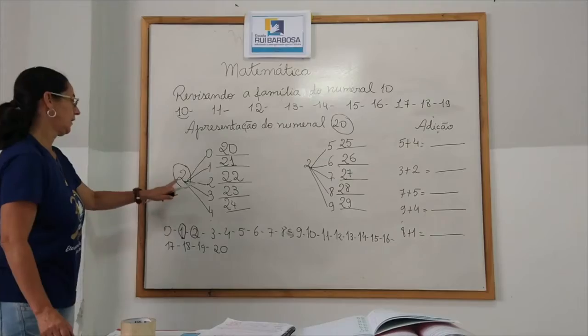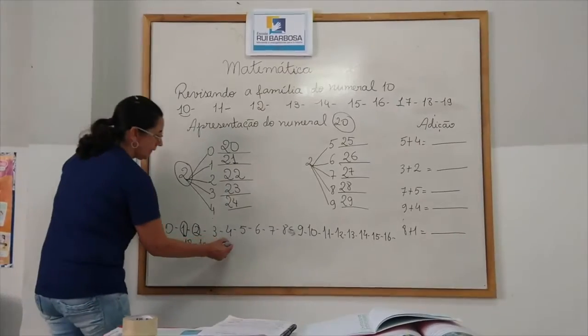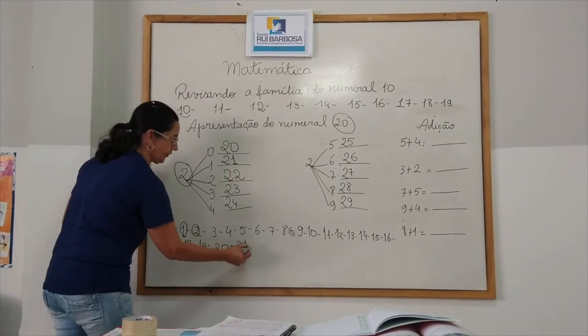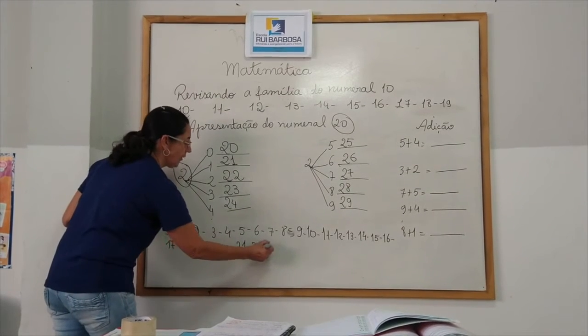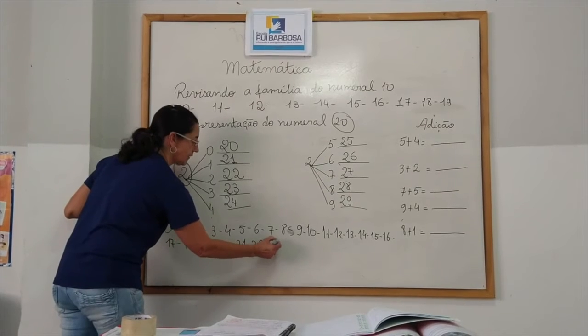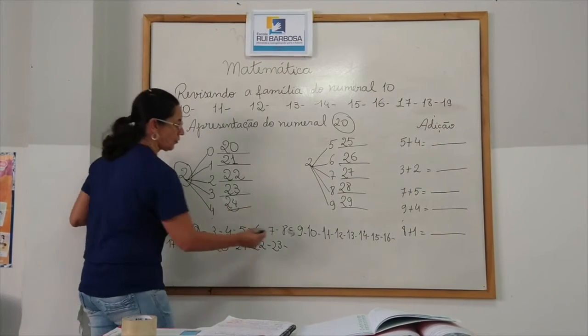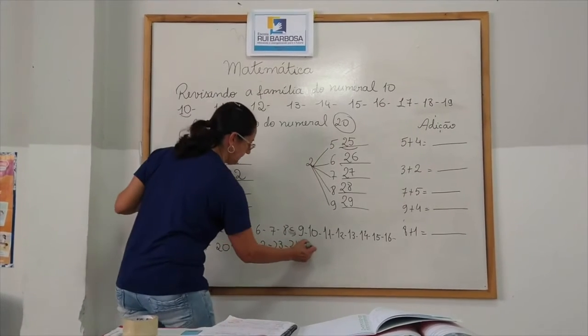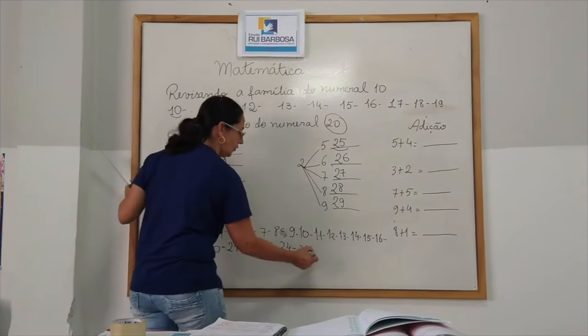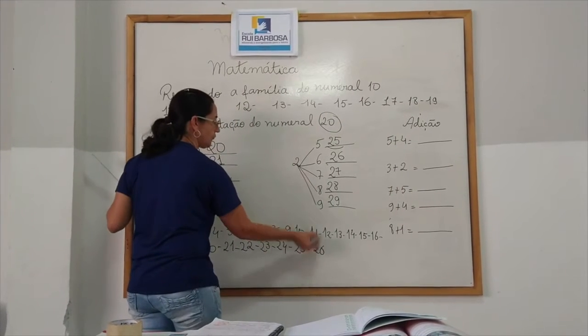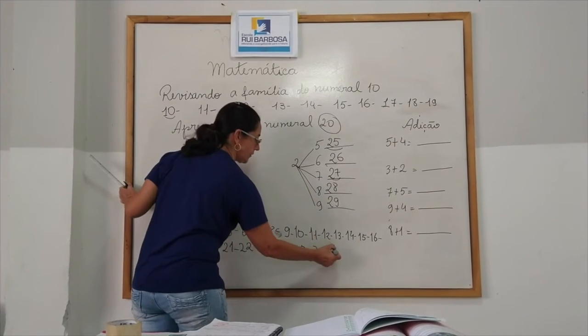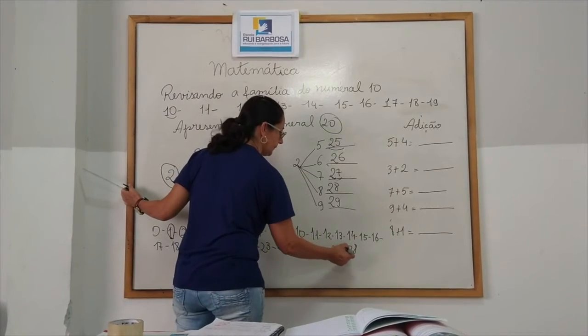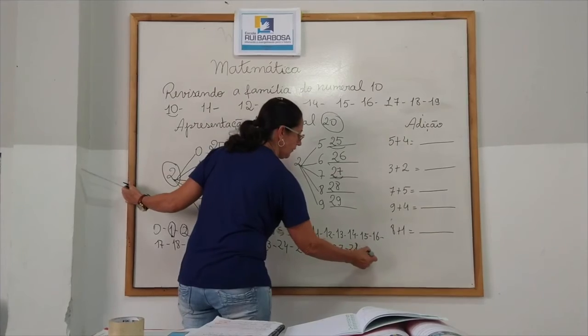O 2, ó, que é o chefe formar a família do 20. Depois do 20, 21. Depois do 21, 22. Depois do 22, 23. Depois do 23, 24. Depois do 24, 25. Depois do 25, 26. Depois do 26, 27. Depois do 27, 28. E depois do 28, 29.